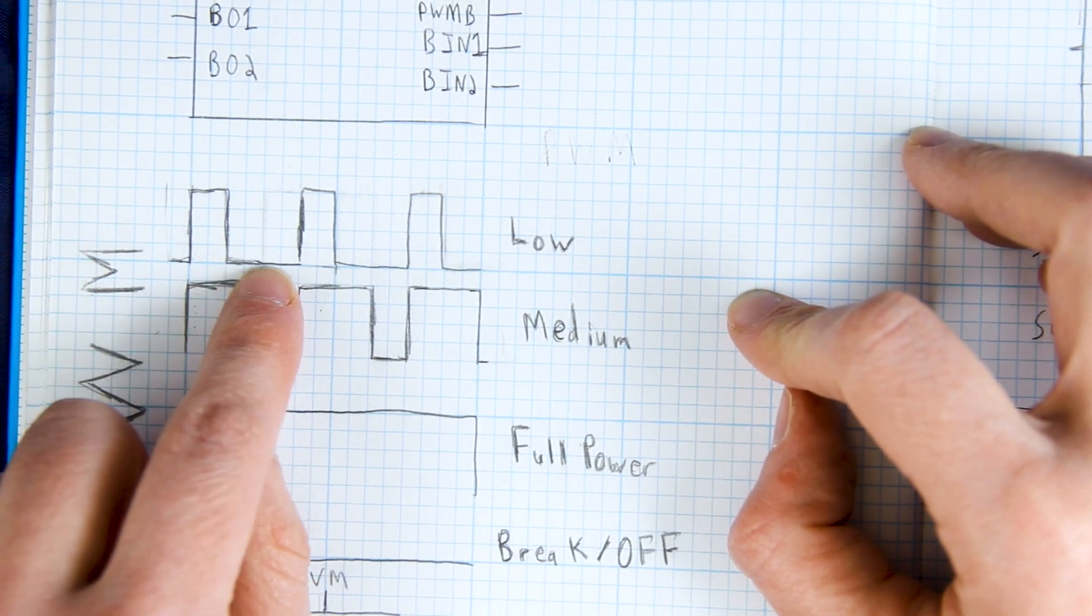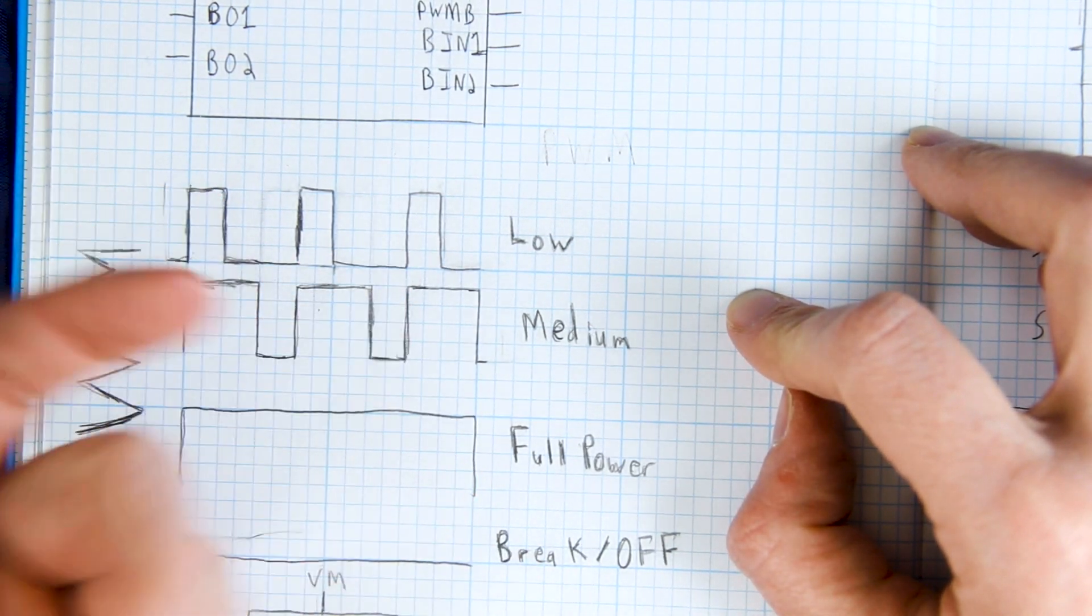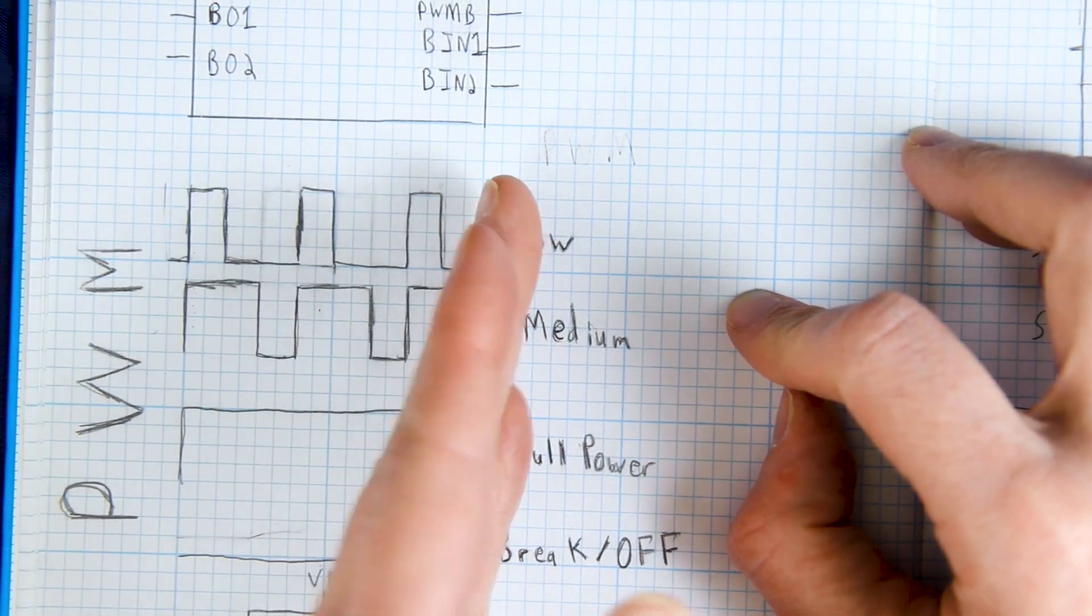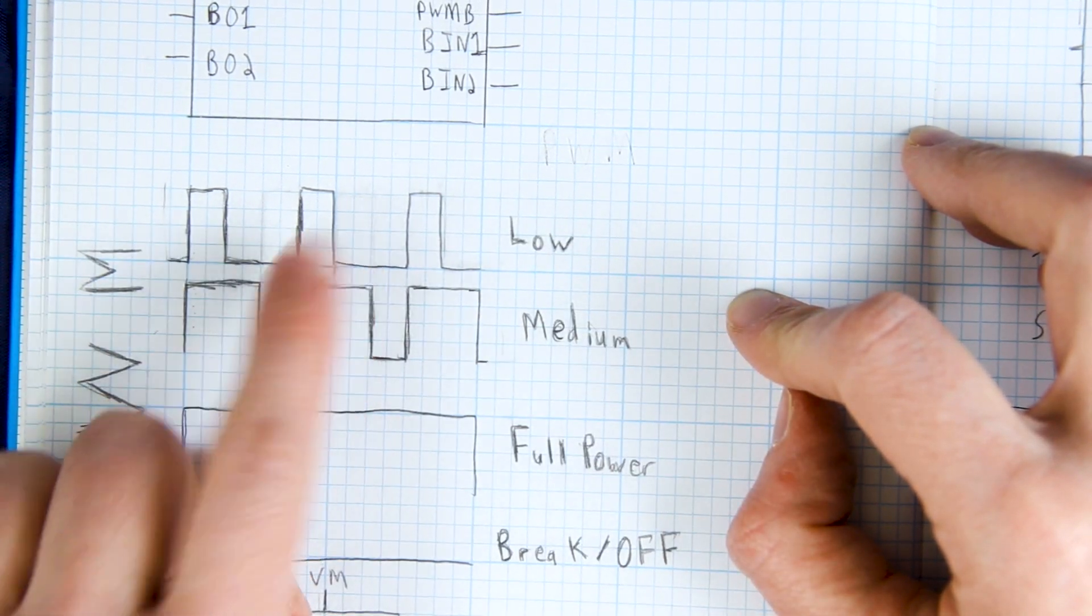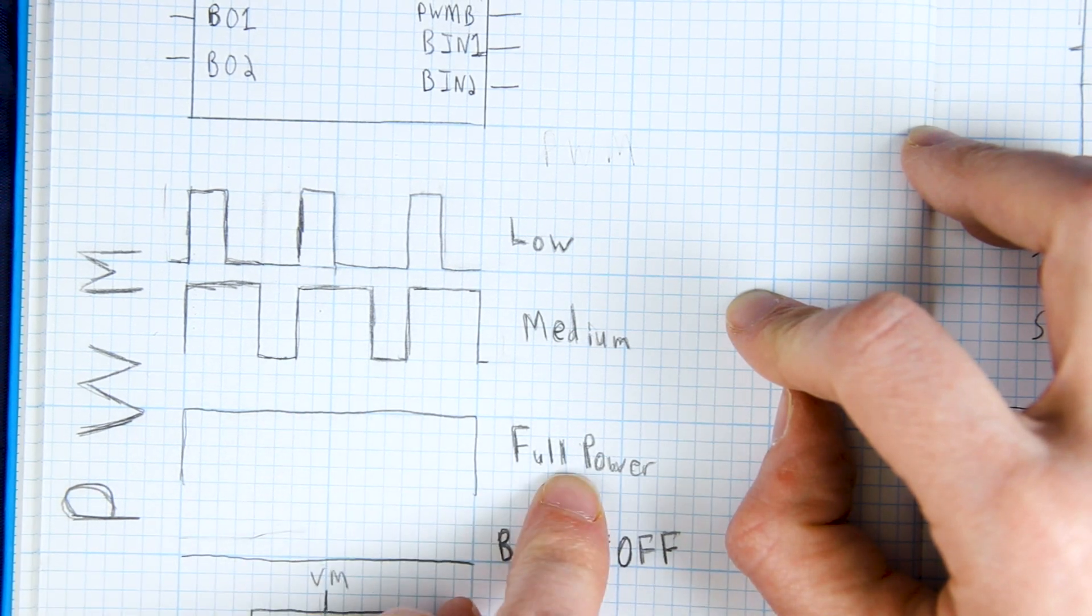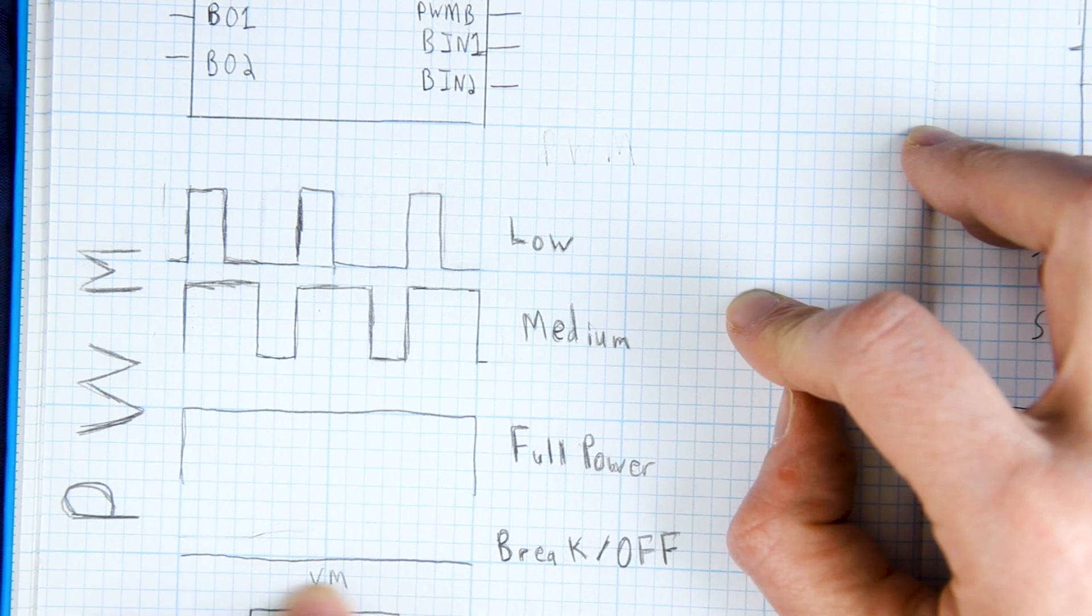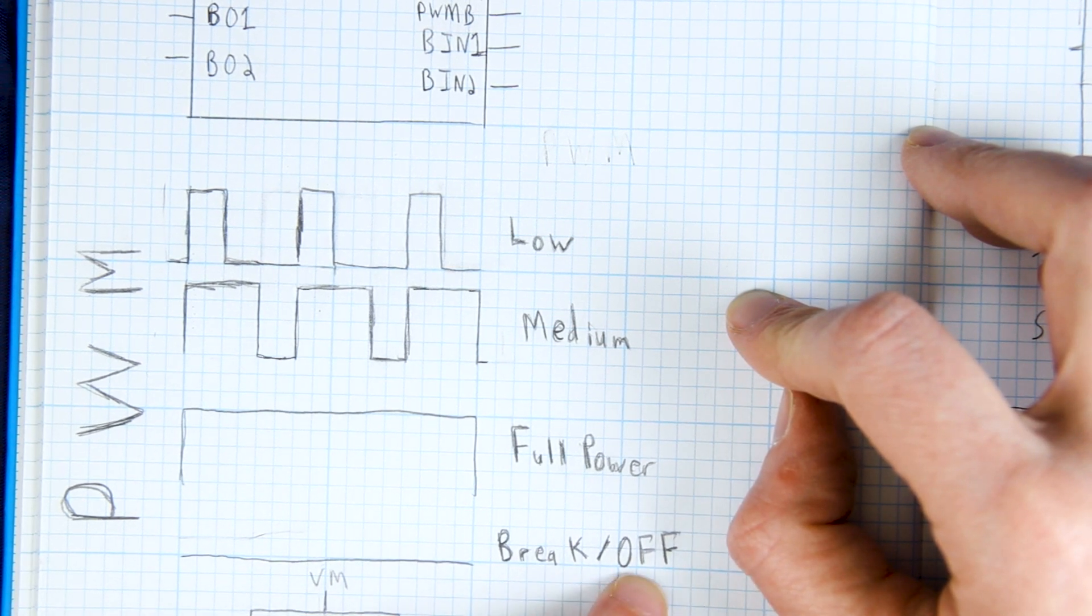When we're talking about digital we either have a low or a high and when we want to change that into an analog signal what we have to do is vary the time between these pulses right here. So if we never had a gap between the high pulses all the way across here we have full power. Our motor is going full tilt forward but if we had it zero then we're either braking or we turned off the motor.